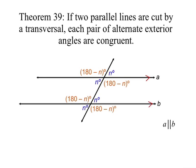Theorem 39: if two parallel lines are cut by a transversal, each pair of alternate exterior angles are congruent. Here's one pair, both n degrees in measure, and there's the other pair, both 180 minus n degrees in measure.